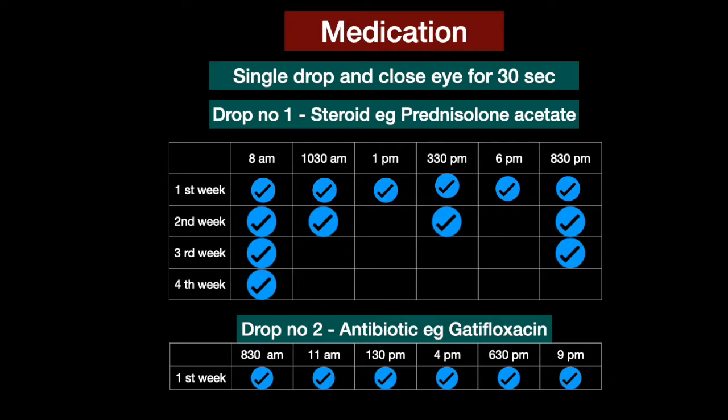Drop number two, the antibiotic eye drop, is applied only in the first week, six times a day. The timing for the antibiotic drop is about half an hour later than the steroid so that it does not interfere with the action of the steroid. This is a rough timing, but you can adjust it according to your convenience.